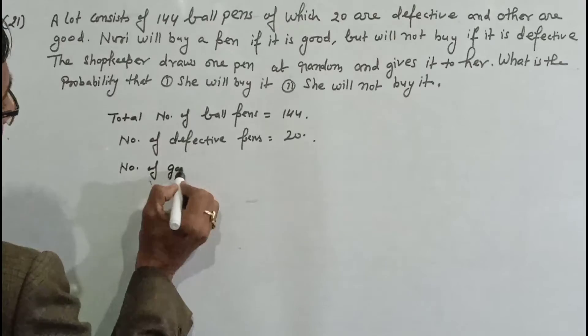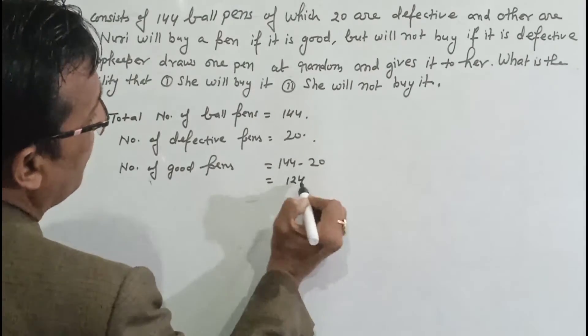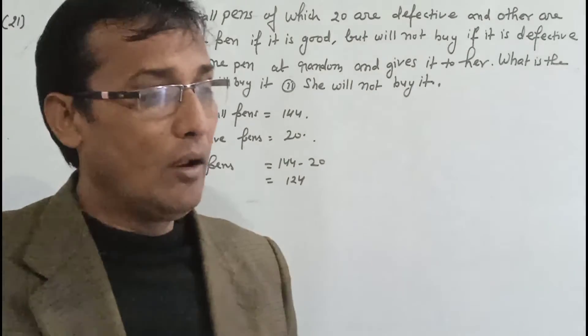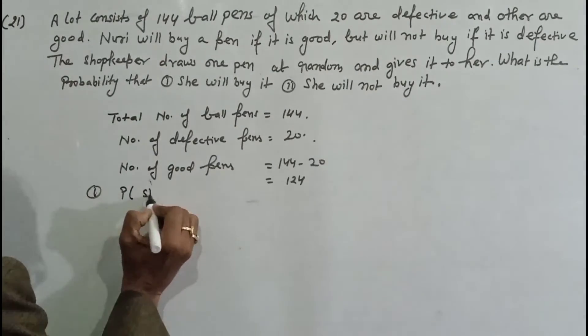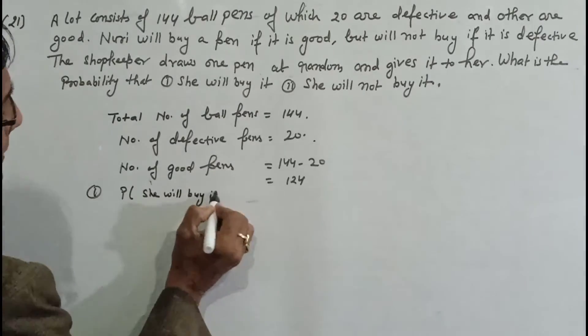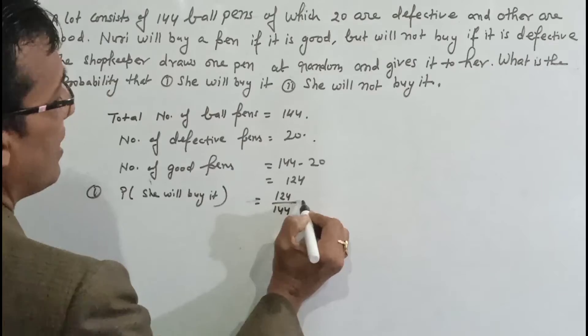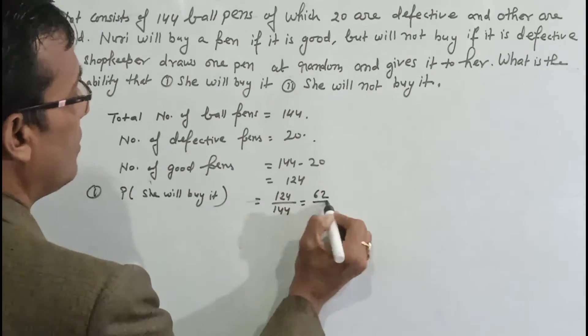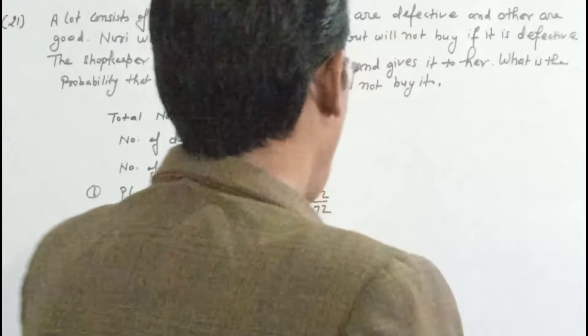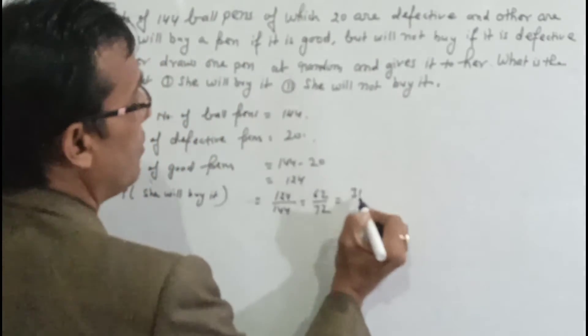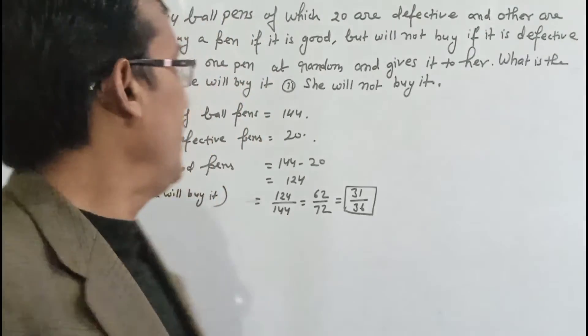Number of good pens equal to 144 minus 20, which is 124. You have 124 ball pens and you can divide it. 124 upon 144 equals 31 upon 36. Probability she will buy it equals 31 upon 36.